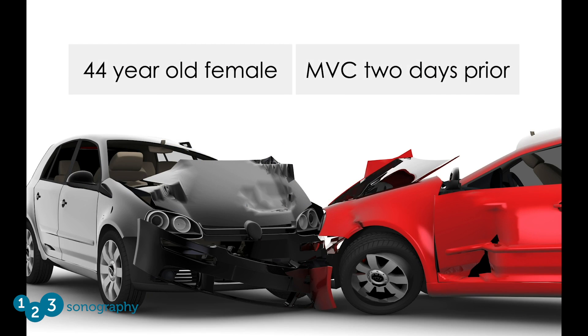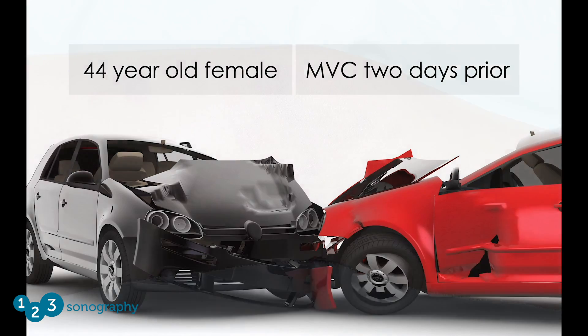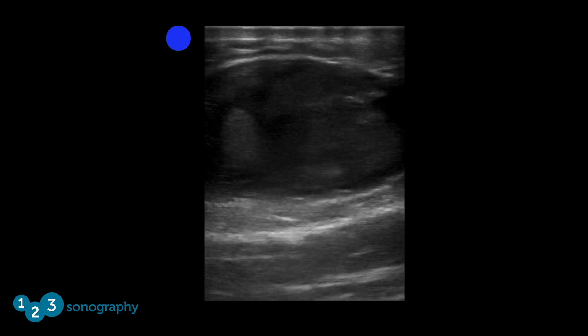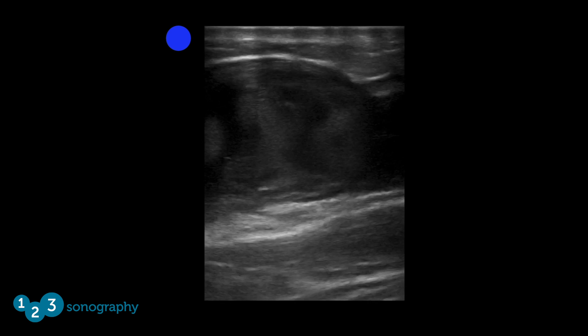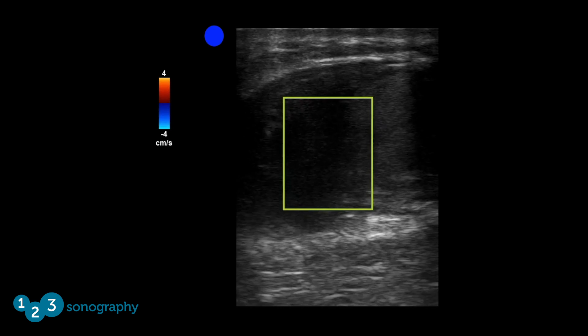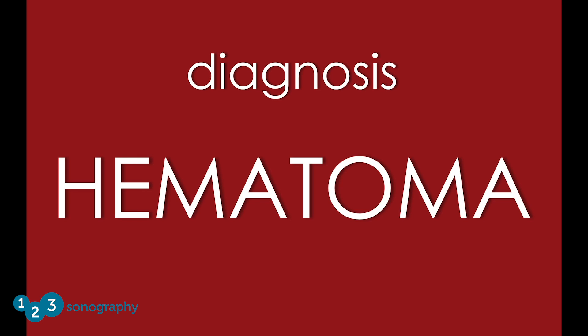Case number four: a 44-year-old female presenting two days after a motor vehicle collision with left thigh tenderness and bruising. Physical exam reveals a large bruise on the anterior thigh with swelling and tenderness; x-ray of the femur and knee are unremarkable. Bedside ultrasound demonstrates a heterogeneous fluid-filled structure over the point of maximal tenderness and ecchymosis. When color Doppler is applied, there is no evidence of blood flow. The diagnosis is hematoma — although the ultrasound image looks a lot like an abscess, the history and exam are consistent with hematoma from recent trauma, and the lack of blood flow on Doppler is a useful distinguishing feature.